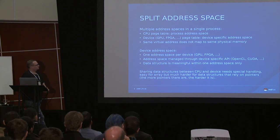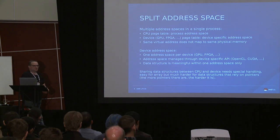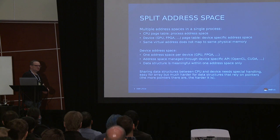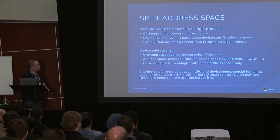This one-address-space-per-device issue is becoming a bigger problem. When it was an API like OpenGL, it wasn't much of an issue because most of the time the address space was hidden from the application. We didn't really rely on pointers — we relied on higher-level constructs. So we didn't really see the pointer problem.